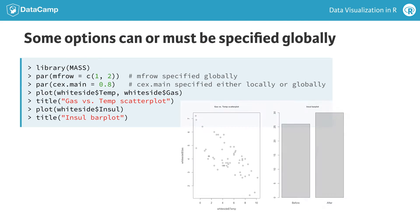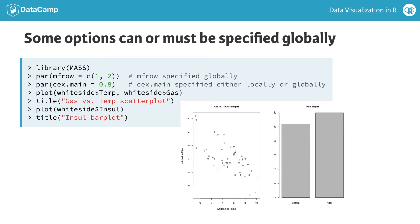Here is an example of a global parameter that can only be set by the par function. mfrow sets up an array of multiple plots, and this must be done before any of these plots can be generated. In this case, we have specified par(mfrow = c(...)) to set up an array of two plots side by side. Part of chapter 4 is devoted to a discussion of the effective use of multiple plot arrays like this one.